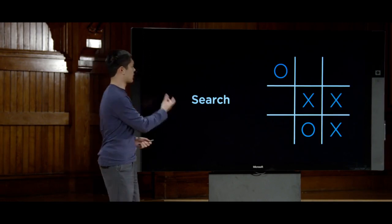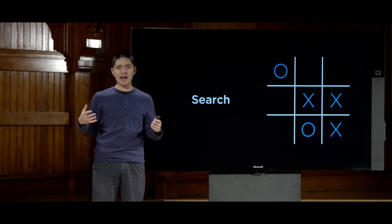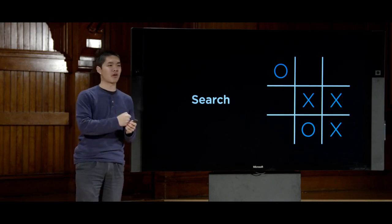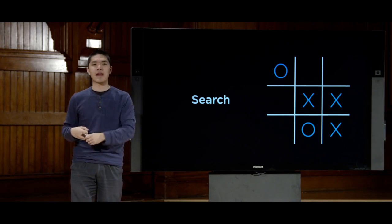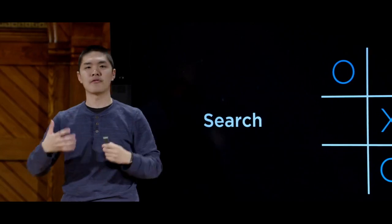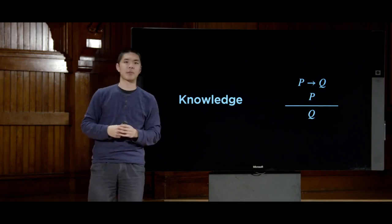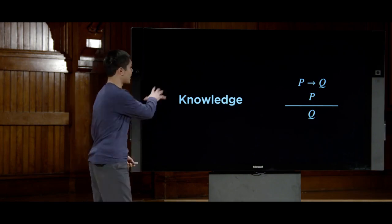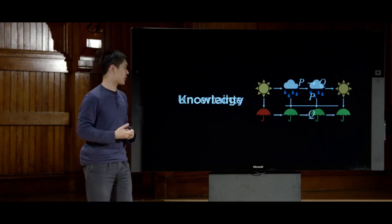We'll begin our conversations with search — the problem of having an AI search for solutions to some kind of problem, whether it's trying to get driving directions from point A to point B, or figuring out what move to make in a tic-tac-toe game. After that, we'll look at knowledge: how AI can represent information and draw inferences from it to reach additional conclusions.